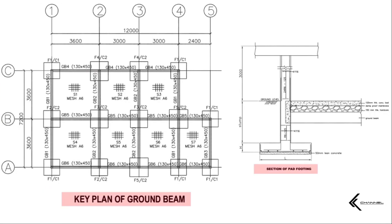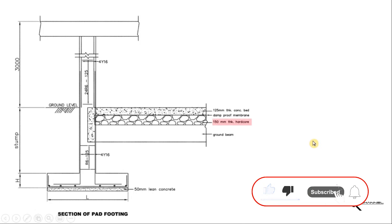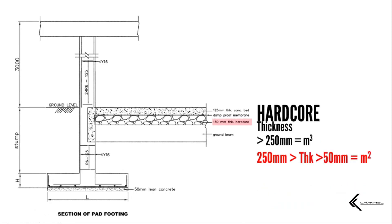Sebagai permulaan, kita perlu merujuk kepada key plan of ground beam dan juga section of back footing. Apabila kita melihat pada key plan of ground beam ini, kita dapati terdapat tujuh ground floor slab pada S1, S2, S3, S4, S5, S6 dan S7. Memandangkan ketebalan hardcore kita adalah 150mm, maka unit yang kita kena cari adalah in meter square, di mana 150mm thickness adalah di antara range less than 250mm and more than 50mm.